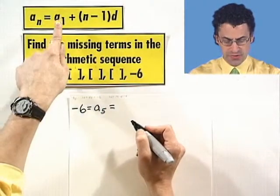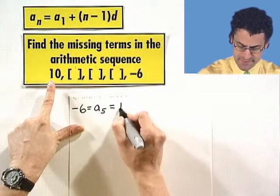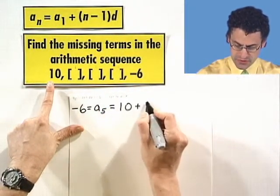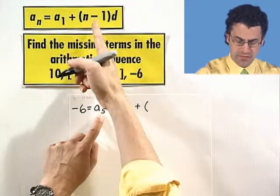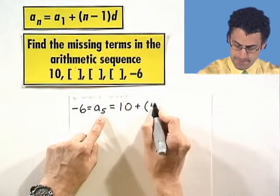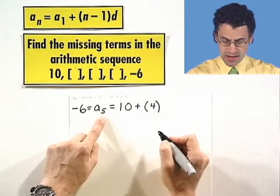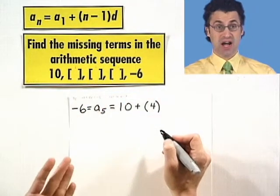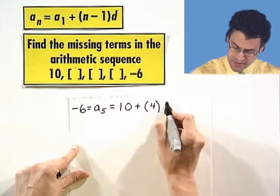Well, by this formula, I know it equals the first term, which is given to be 10, plus, well, 5 minus 1, n is 5, so that's just 4, multiplied by d. Well, that constant difference we don't know yet, so I'm just going to write that in d.